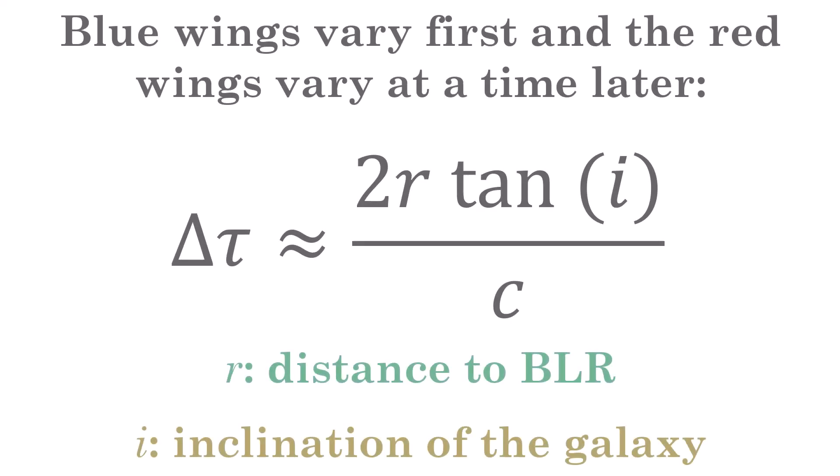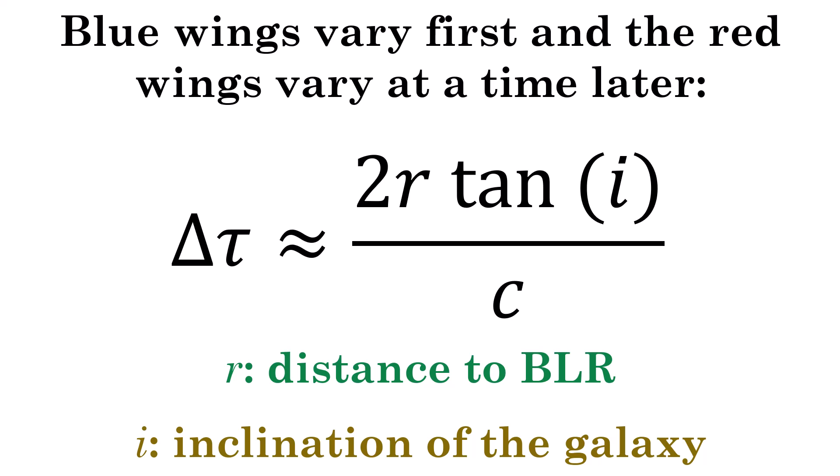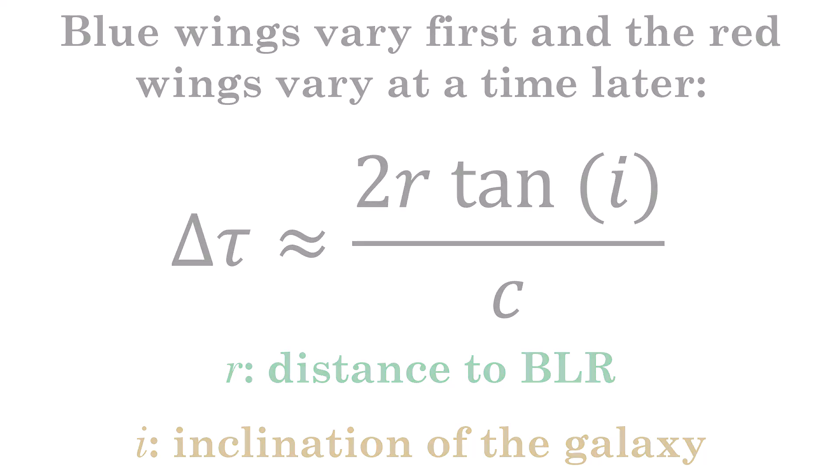There are a few other caveats that are worth mentioning. Firstly, the side of the broad line region which is closest to us, so the blue shifted side, will be seen to vary first. This makes sense as the red shifted side is further away from us, so light has further to travel before we see it. This can make estimating the time delay a bit confusing if you don't account for it.